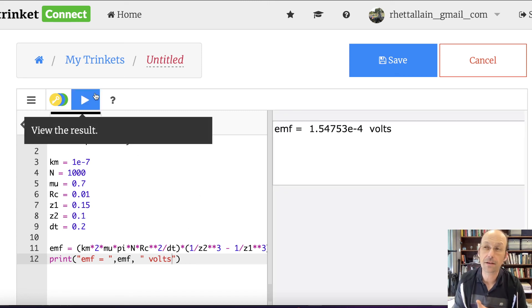And maybe you see how awesome Python is for a calculator here, but it is. And so I get a voltage of 1.5 times 10 to the negative 4th volts. That's it. That's done.